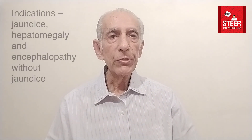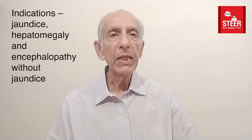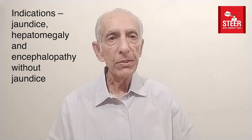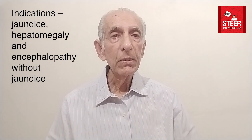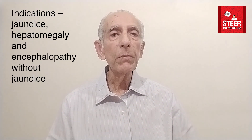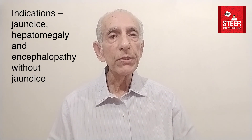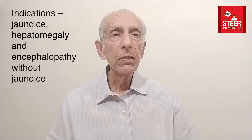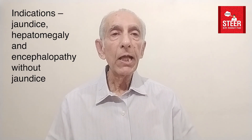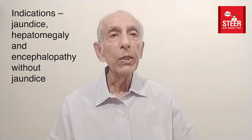Enzyme deficiency like Crigler-Najjar, for example, or Gilbert syndrome, and then on the other hand you have Rotor or Dubin-Johnson syndrome giving you a direct bilirubinemia. Having said this, what would be the indications of doing a liver function test? Jaundice of course is the main indication, but besides that even when there is no jaundice, a hepatomegaly of obscure etiology would demand doing the baseline liver function test.